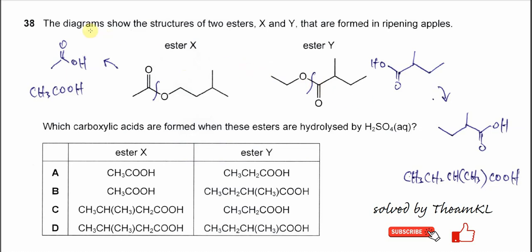Question 38. The diagram shows the structures of two esters X and Y. Which carboxylic acids are formed when these two esters are hydrolyzed by H₂SO₄? This is a very easy question. When the ester undergoes hydrolysis, the ester bond breaks here, and the carbonyl group will get the OH and this oxygen will get the H.